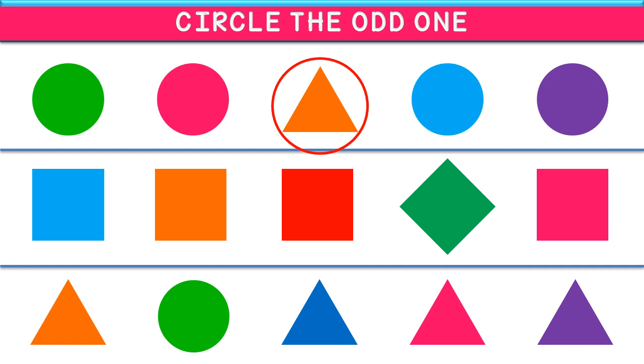All the shapes apart from a diamond are squares. So, the odd one is a diamond shape. The diamond is the correct answer. We have to circle the diamond shape.